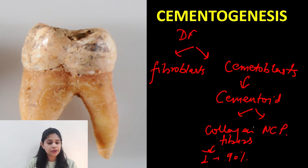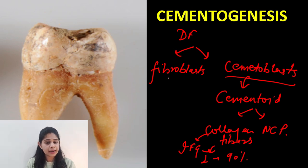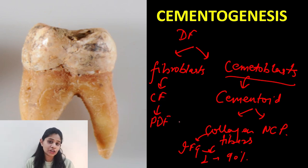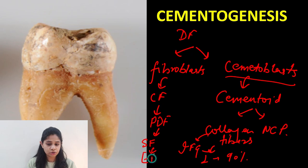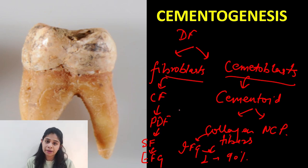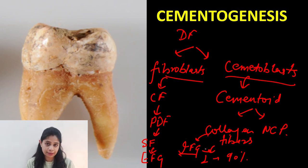The collagen fibers produced by the cementoblasts are termed the intrinsic fiber group. On the other hand, the fibroblasts help in the production of the collagen fibers that form the periodontal ligament fibers. A certain part of these periodontal ligament fibers — also called Sharpey's fibers — are also present in the cementum tissue, and this forms the extrinsic fiber group. So fibroblasts produce the extrinsic fiber group present in the cementum, whereas cementoblasts produce the intrinsic fiber group.